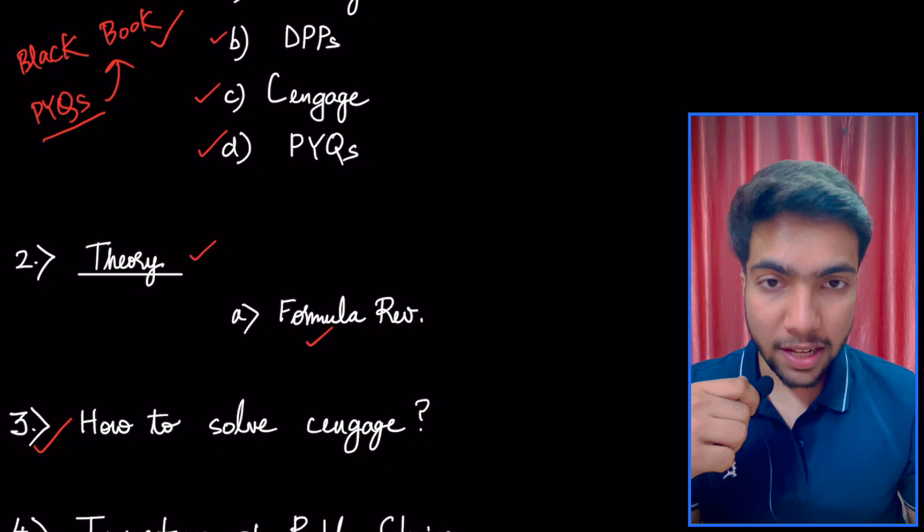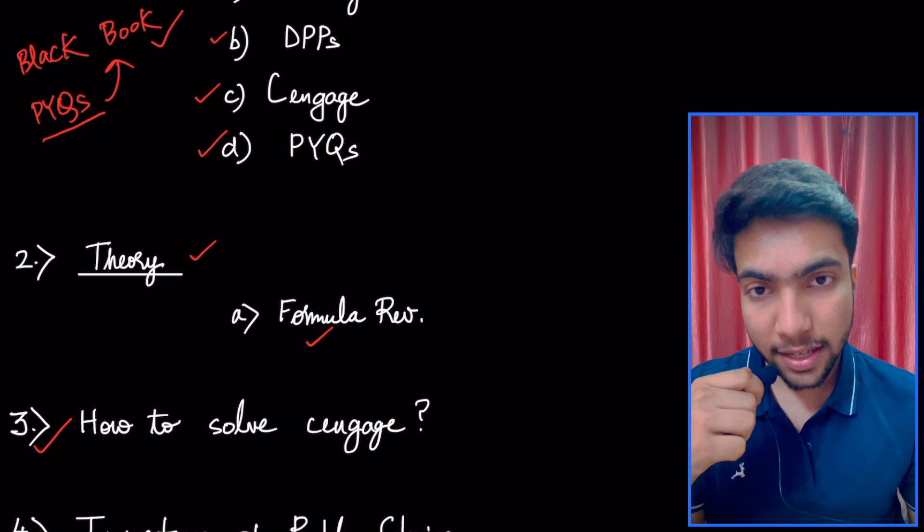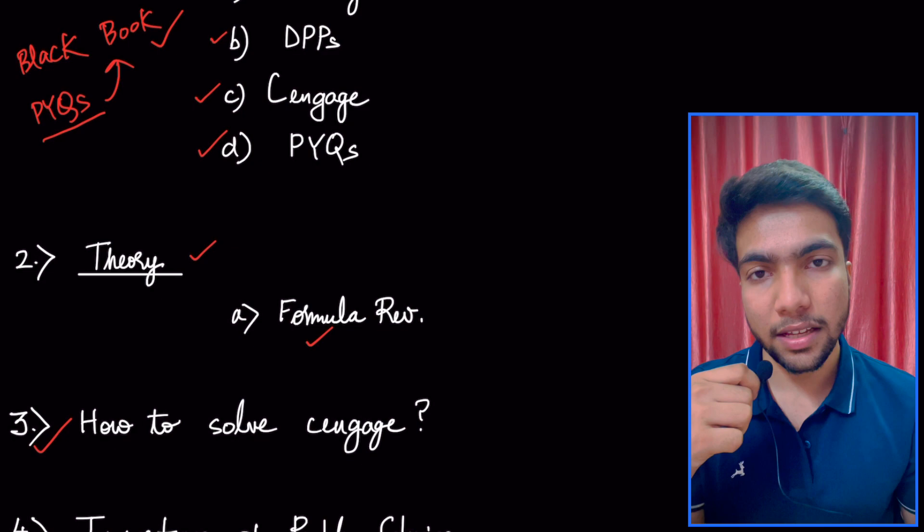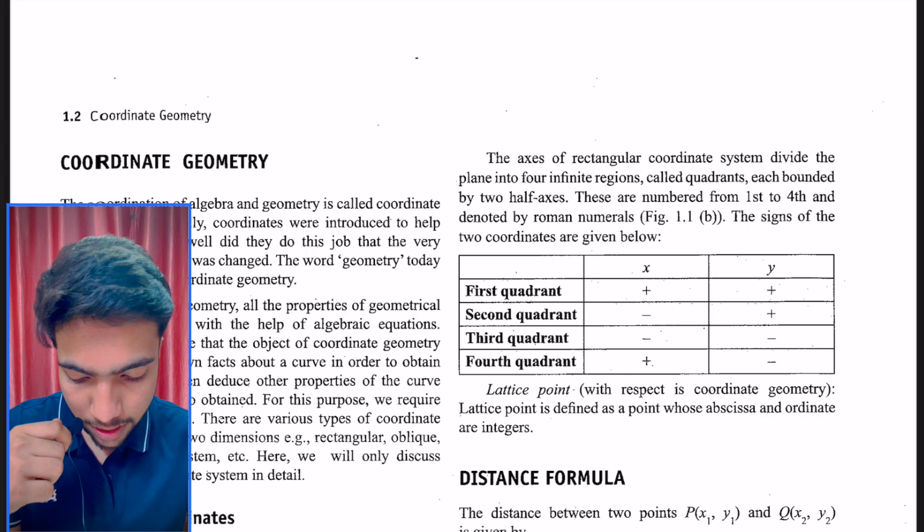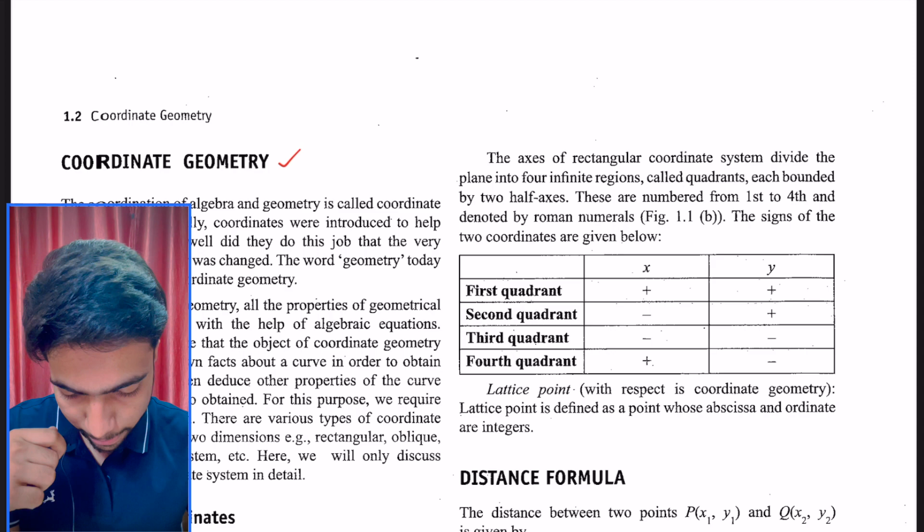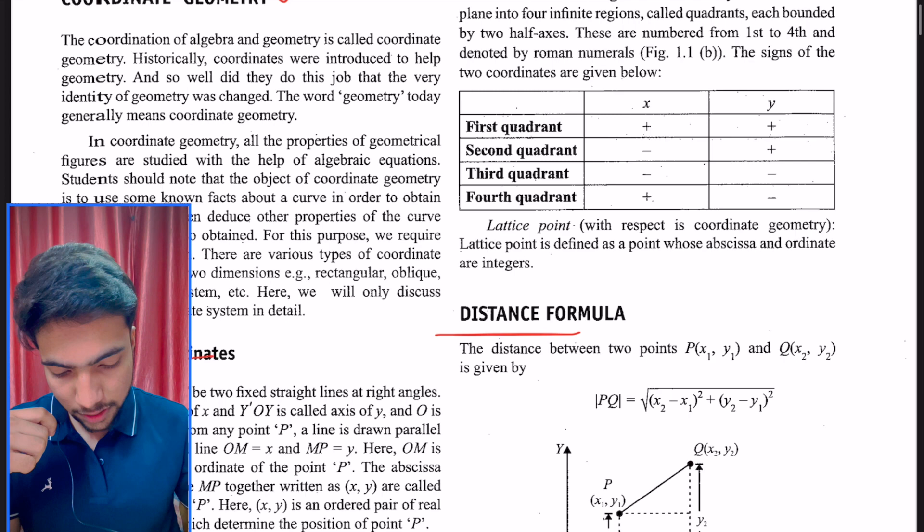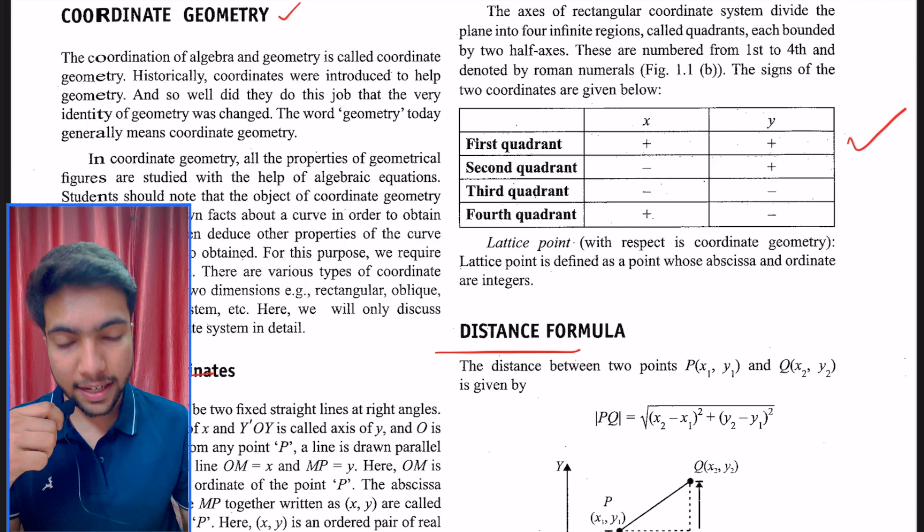As I said, if you're a self-study student or going to coaching but don't get advanced level content fully, then you need to use Cengage. But how do you solve it? It's a very bulky book with many questions. Do you need to do all questions or not? Let's see how to solve it. I'm using coordinate geometry as an example to understand how to solve Cengage. When we start coordinate geometry, first of all there's Cartesian coordinates, distance formula. These are basics. Even though it's an advanced level book, basics are there from NCERT - coordinates, second quadrant, third quadrant, fourth quadrant, distance formula.